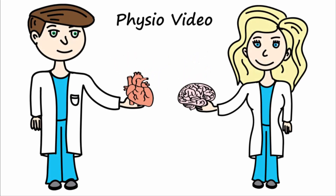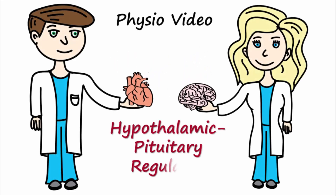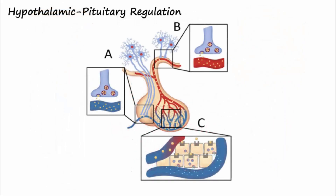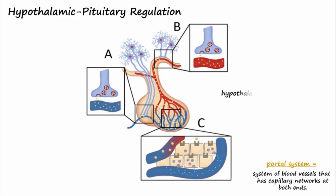Today, let's discuss how hormones of the hypothalamus affect secretion of pituitary hormones. A portal system is a system of blood vessels that has capillary networks at both ends. The hypothalamo-hypophyseal portal system refers to a network of capillaries in the hypothalamus that is connected to a capillary network of the anterior pituitary gland, allowing hormones released from the hypothalamus to travel in the blood to the anterior pituitary to influence release of hormones there.